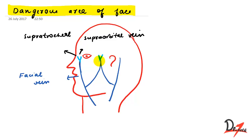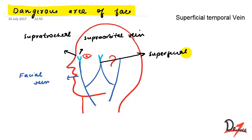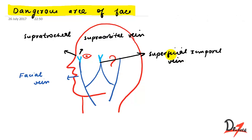This vein right here — let me change the color — is the superficial temporal vein. We call it the superficial temporal vein because we have the temporal bone in this area. So the vein in this region is called the superficial temporal vein.